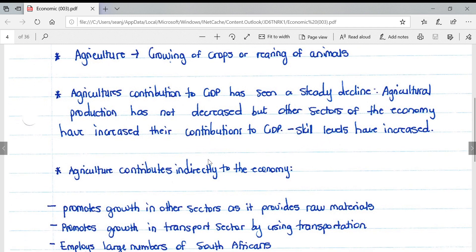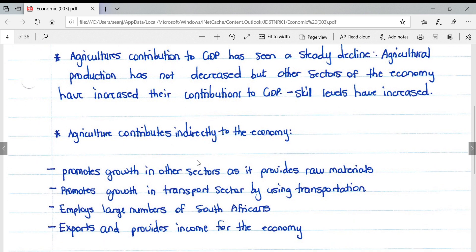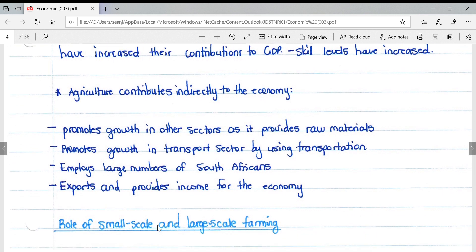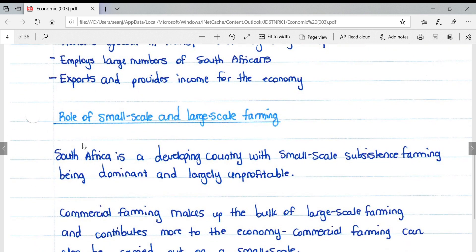Skill levels have increased. Agriculture contributes indirectly to the economy in the following ways: it promotes growth in other sectors as it provides raw materials, promotes growth in the transport sector by using transportation, employs large numbers of South Africans, and provides exports and income for the economy.